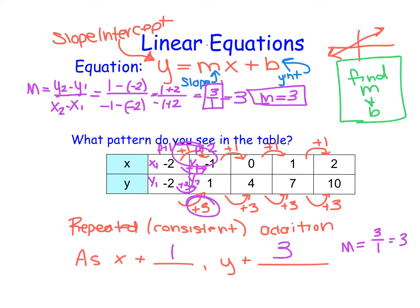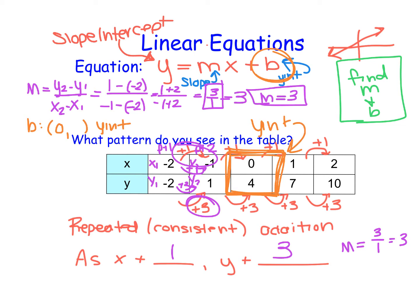Then I also need to find the value for b. I know that b is my y-intercept point, so b is going to be a point where x is 0. I can look at my table and notice that when x is 0, y is 4. So this is my y-intercept point hidden inside my table — when x is 0, y is 4, which tells me that b is equal to 4.